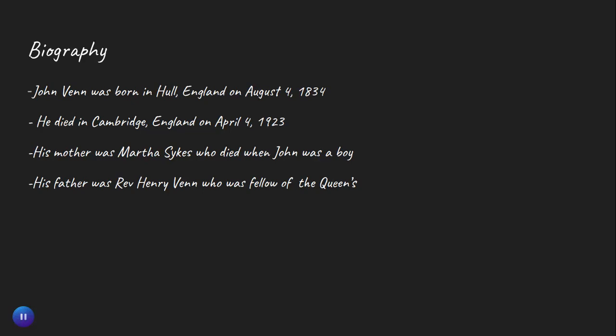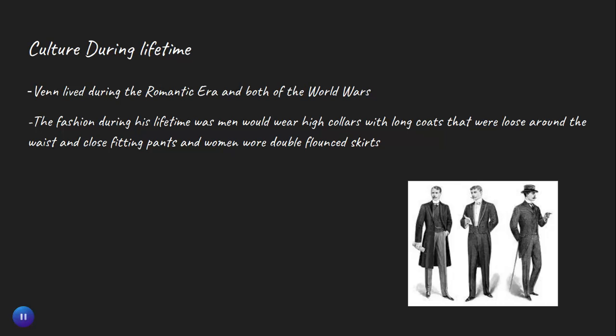His mother Martha died when he was a boy. His father, Reverend Henry Venn, was a Fellow of the Queen's, which basically meant he was part of the royal family probably. He lived in the Romantic era, so he lived through both of the World Wars.